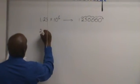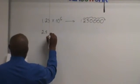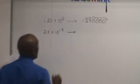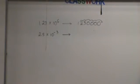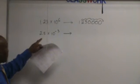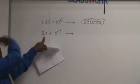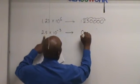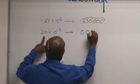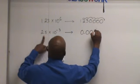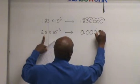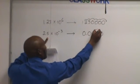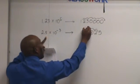2.8 times 10 to the negative 3. Now we're going to go the other way. You need to go 3 places from that point. That's going to give us 0.0028. Remember, the decimal was here — one, two, three.